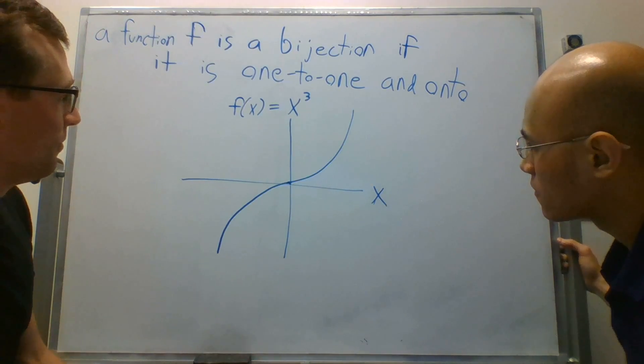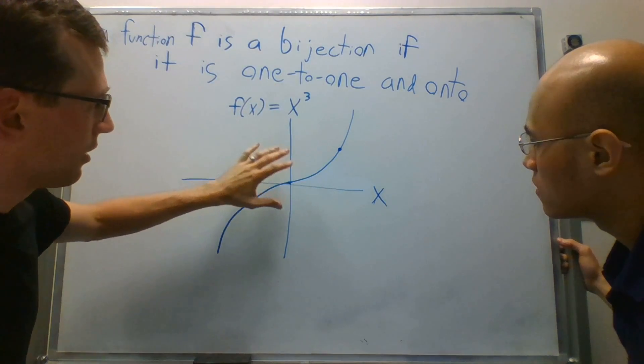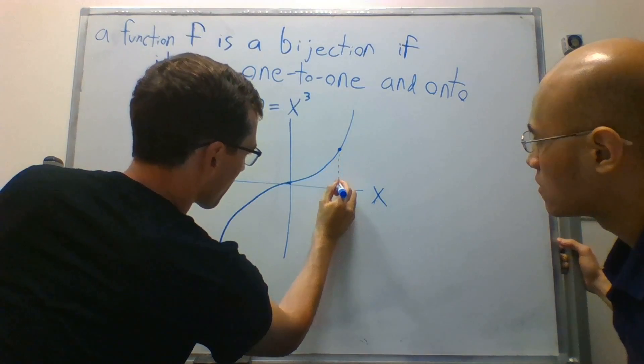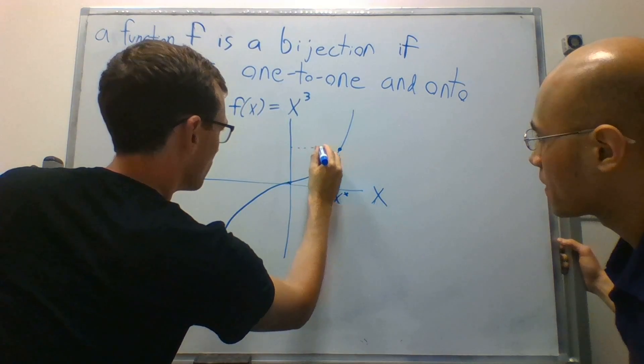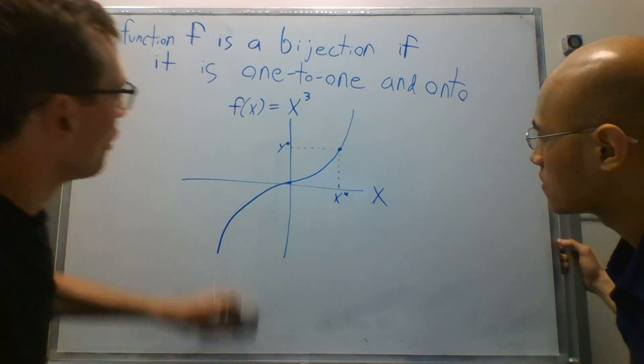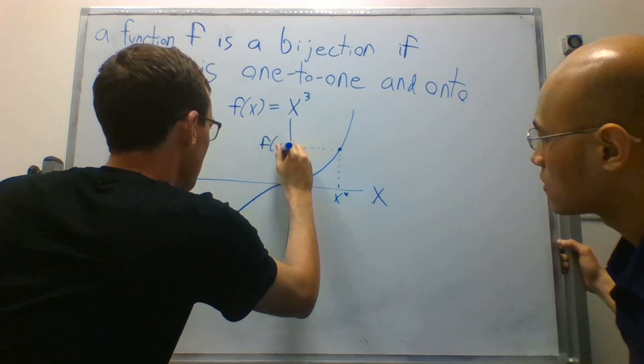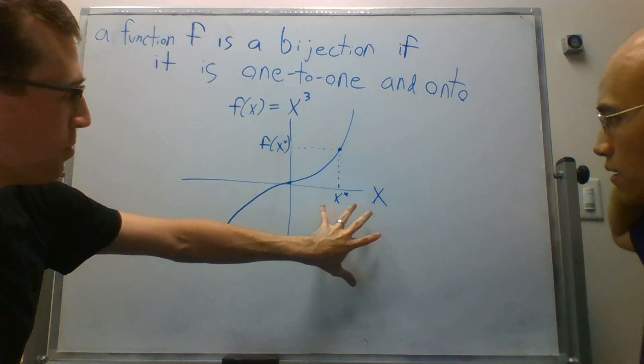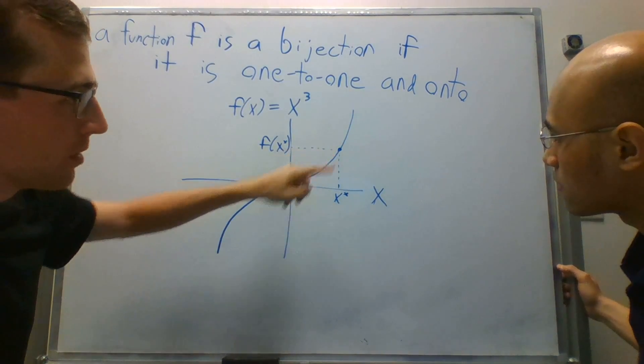So let's say f of x is this. Well, to me, it looks like x needs to be equal to, we'll call that x star. To y star. Let's say y star. Or f of x star, just to make it a little nicer. So there's only one point in the domain of this function, which is x, that maps to f of x star.